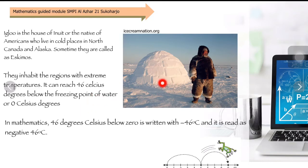It reaches 46 degrees Celsius below the freezing point of water or zero degrees Celsius. The temperature is extremely cold, reaching 46 degrees below zero. In mathematics it can be written as negative 46 degrees Celsius, and it is read as negative 46 degrees Celsius. This is an example of negative integers.